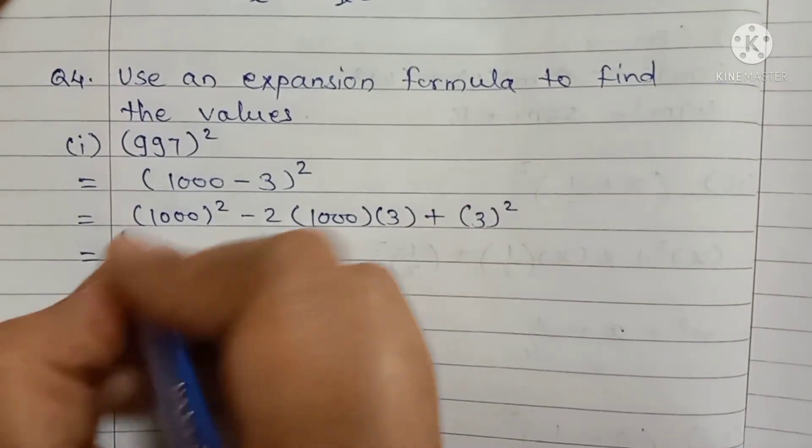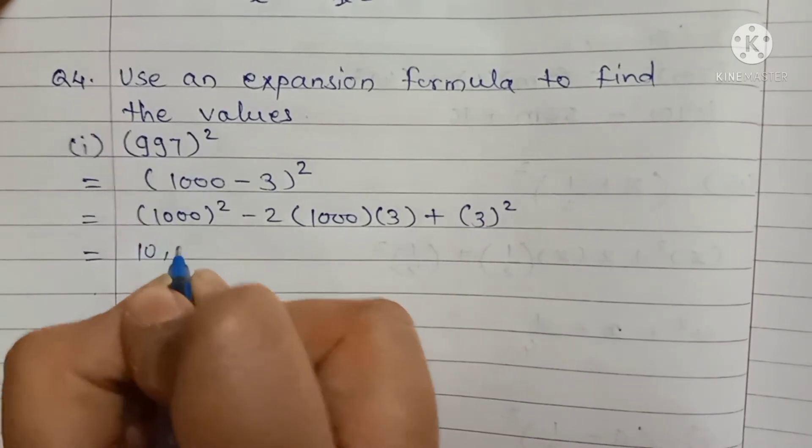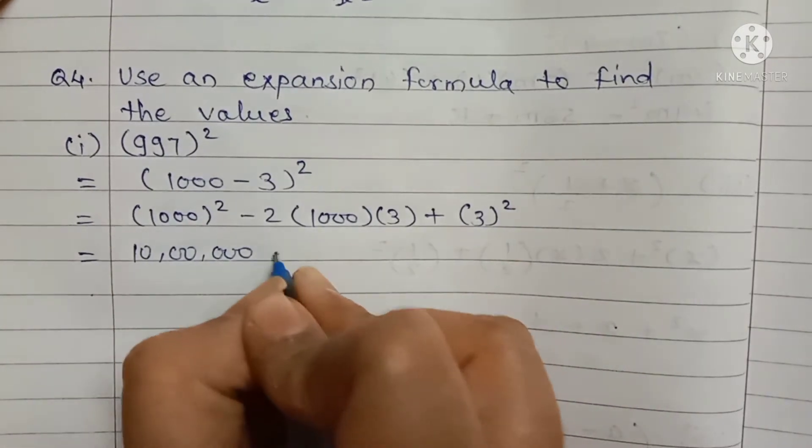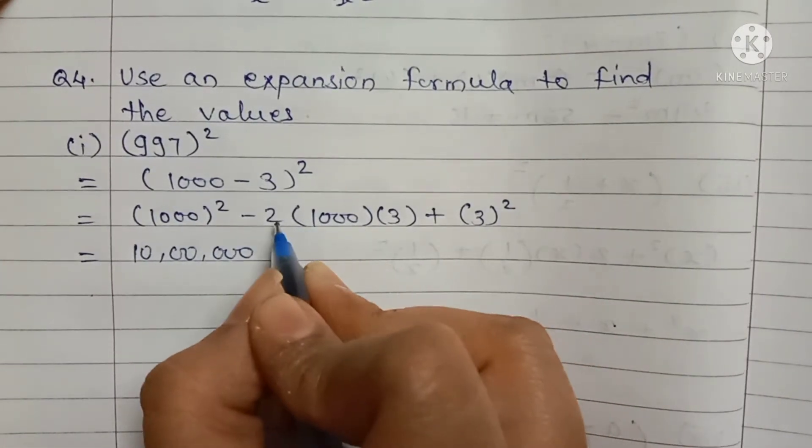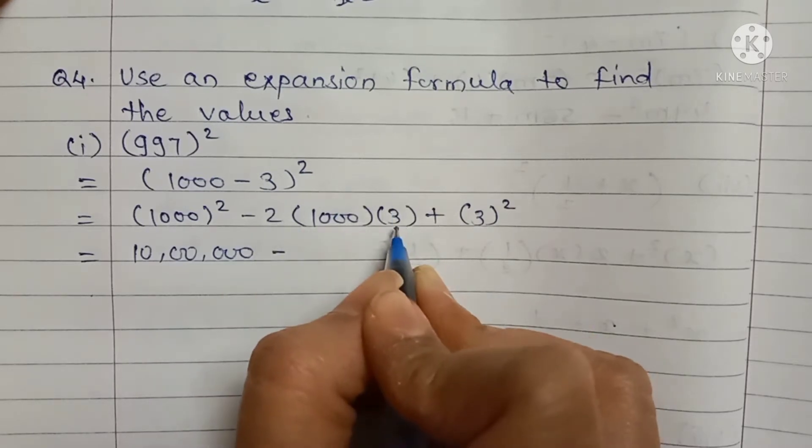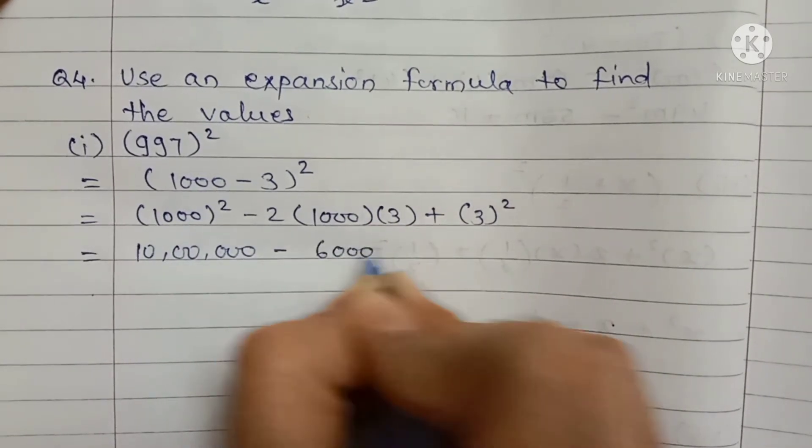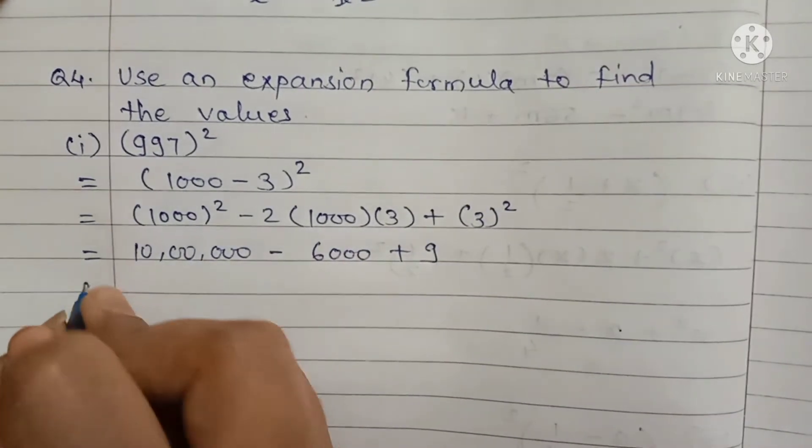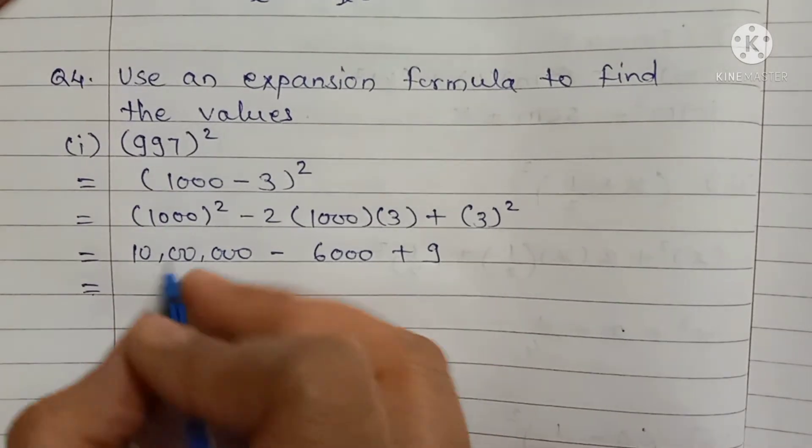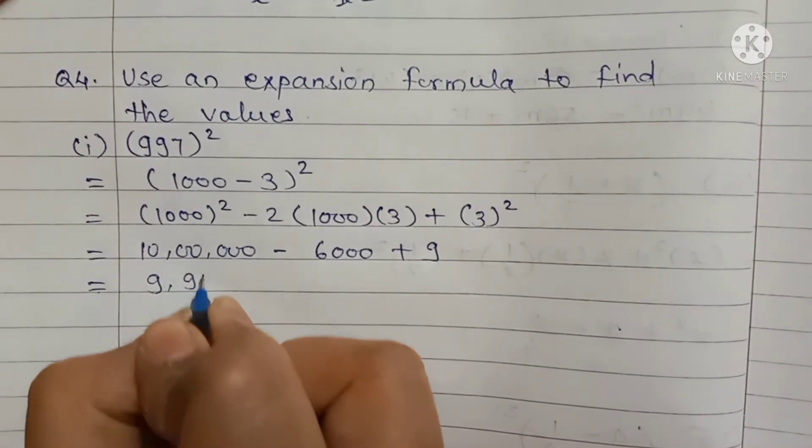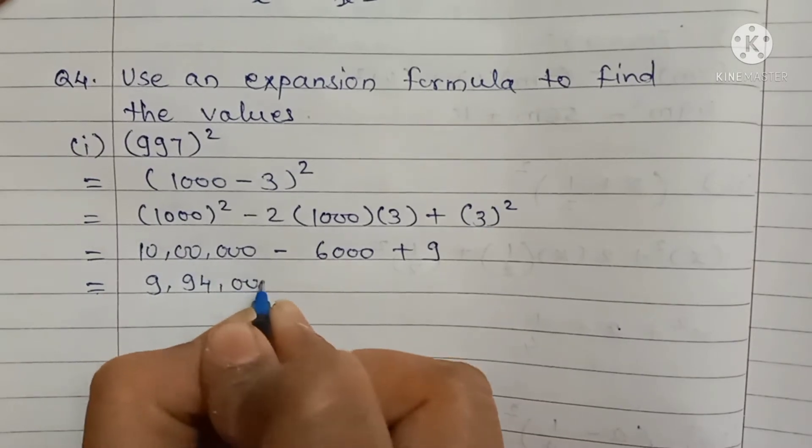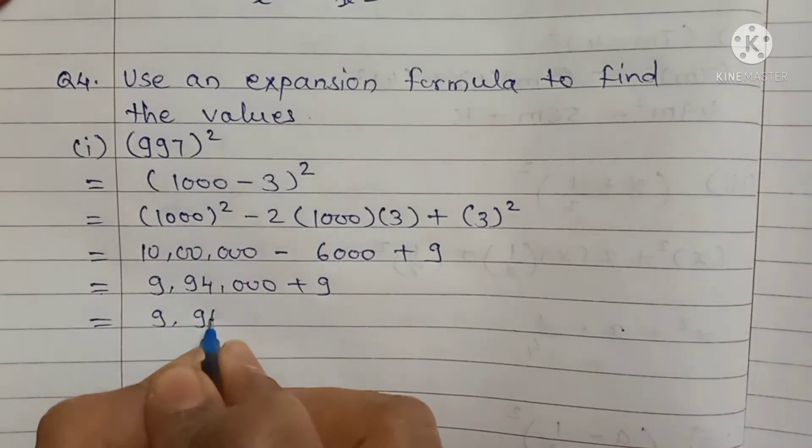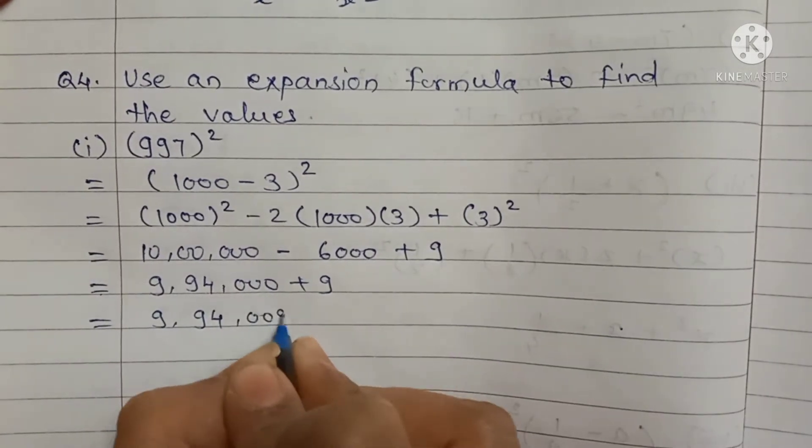1000 square means 10 lakh minus 1000 into 2 is 2000, 2000 into 3 is 6000, plus square of 3 is 9. 10 lakh minus 6000 means 9,94,000 plus 9. Their addition is 9,94,009.